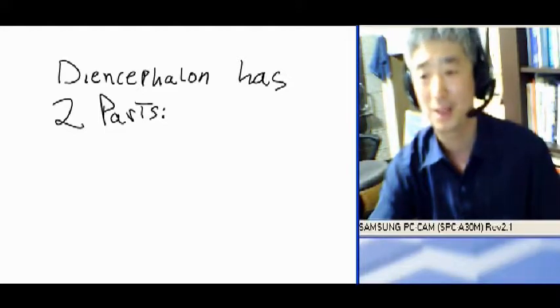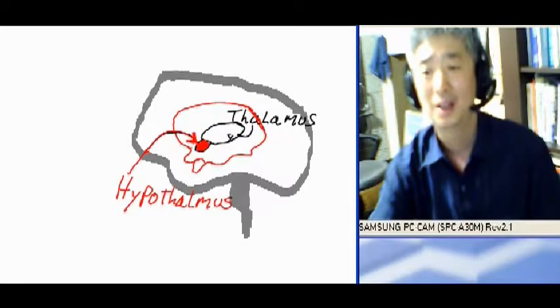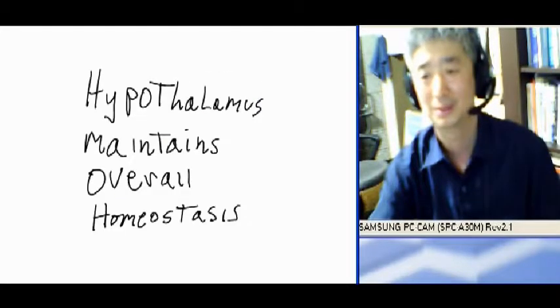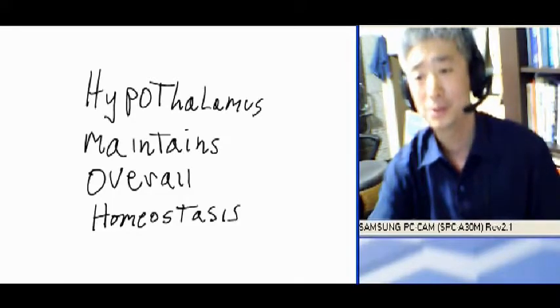The diencephalon has two parts, the thalamus and the hypothalamus. The hypothalamus maintains overall homeostasis.